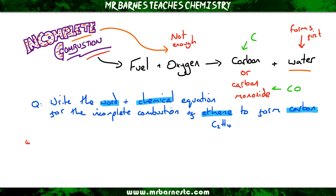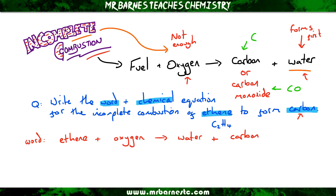The question will also give you that ethene is C2H4. Starting with the word equation — that's nice and simple. We start with ethene, then oxygen, and then what do we produce? The question tells you: water always forms first, and then we get carbon. For the balanced equation, ethene is C2H4, oxygen is O2 — think of the phone company — water is H2O, and carbon is just C from the periodic table.